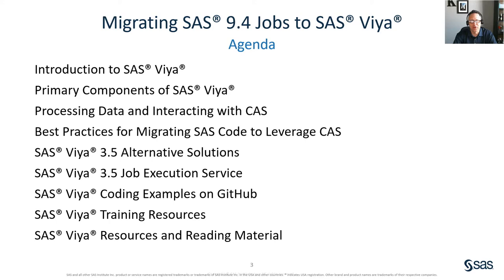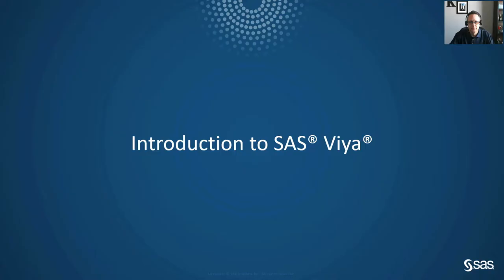In today's presentation, I'll discuss the following agenda items. First, I'll start with an introduction to SAS Viya, followed by the primary components of the SAS Viya ecosystem. I'll discuss how to best process data and interact with CAS, some best practices for migrating your existing SAS 9.4 code to leverage CAS, and some alternative solutions for functionalities not yet supported in SAS Viya. I'll introduce the job execution service, provide coding examples on GitHub, training resources from our formal education department, and additional reading material and documentation around SAS Viya.